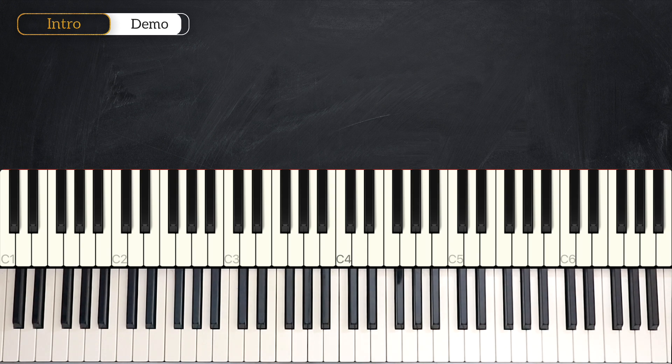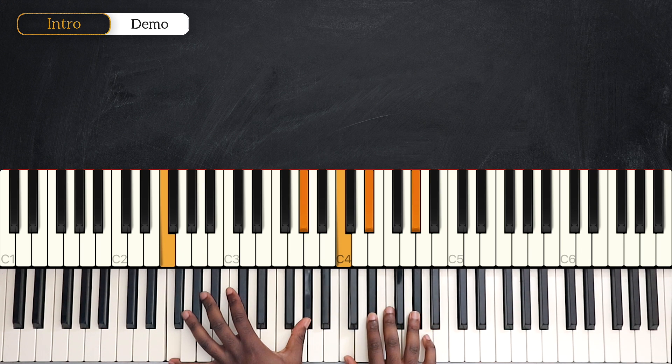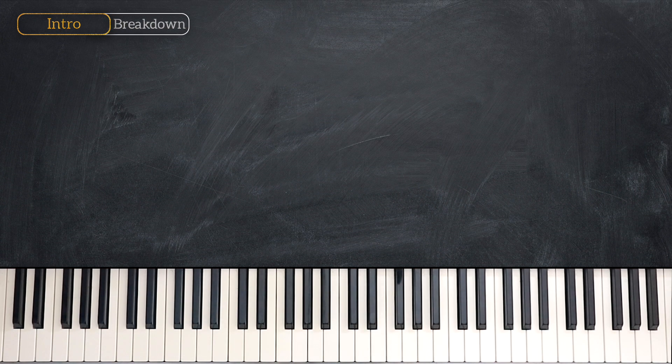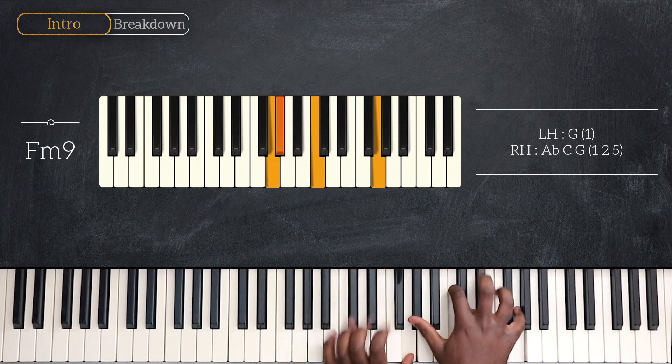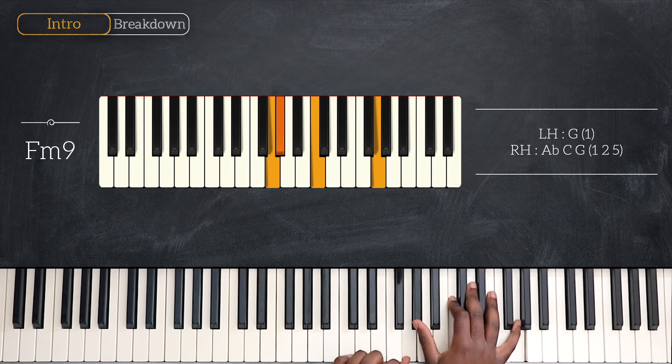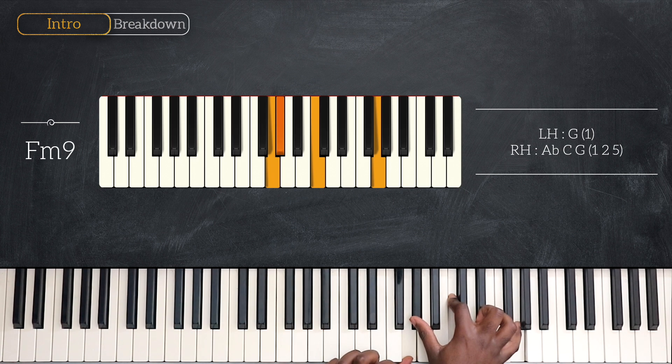We're playing here in the key of F minor. We're going to start the intro playing F minor 9 up here on the keyboard, playing a rootless voicing. On my left, I'm playing one note, the 9th, G, using my thumb. Then for my right, A flat, C, and G, the 9th, played on top once again.